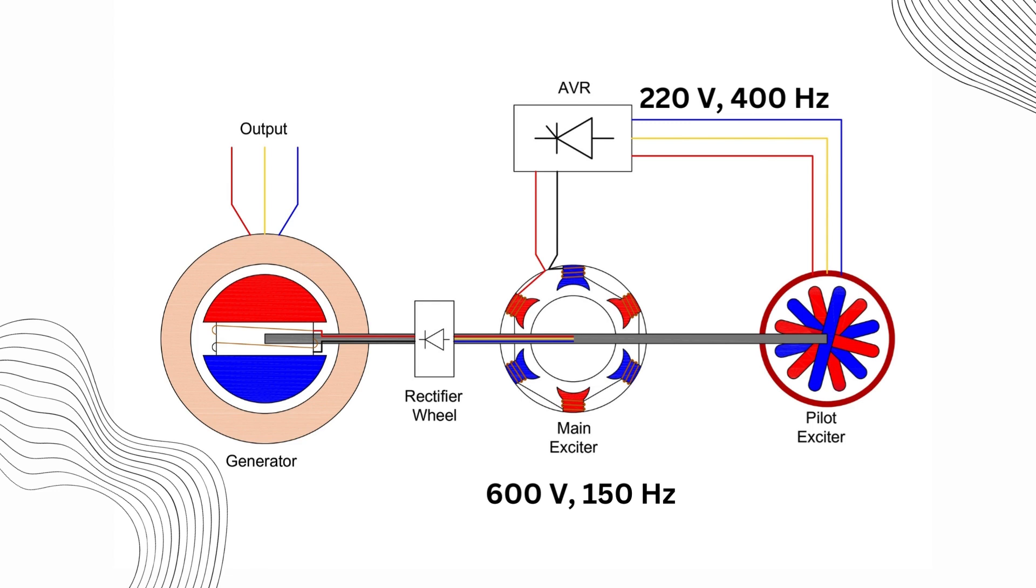The AVR is key in controlling this process. When the power from the pilot exciter reaches the AVR, it's compared to a set point voltage against the main generator's output voltage. The AVR then determines how much voltage should be sent to the main exciter. The higher the field winding voltage in the main exciter, the higher the armature current. This current is rectified again in the diode rectifier wheel before it reaches the rotor winding.